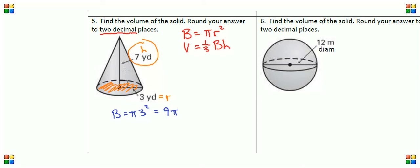Now in this particular situation, I'm going to go ahead and leave pi in our base answer. That means we're only going to round one time at the very end of our question. This is 9 pi yards squared.